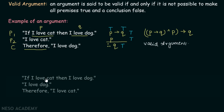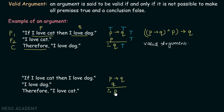Let's consider one more example. If I love cat then I love dog (first premise). I love dog (second premise). Therefore, I love cat (conclusion). This first statement is of the form p implies q, and the second premise is q, so we are asking: if p implies q is satisfied and q is satisfied, then is p also satisfied? We assume p implies q is true and q is also true, and we need to prove that p must also be true for this to be a valid argument.